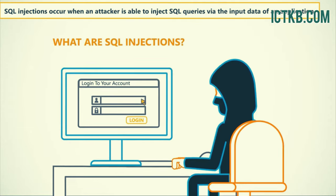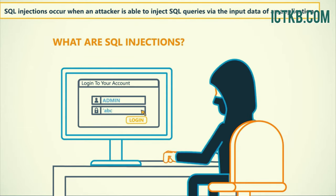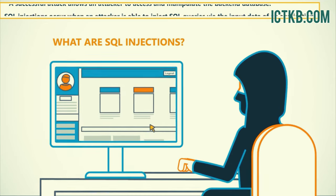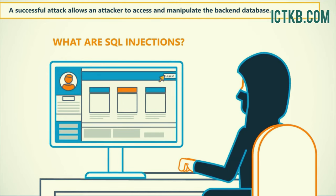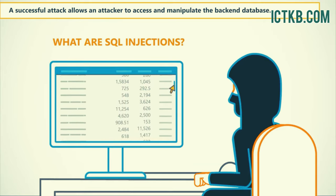SQL injections occur when an attacker is able to inject SQL queries via the input data of an application. A successful attack allows an attacker to access and manipulate the backend database.